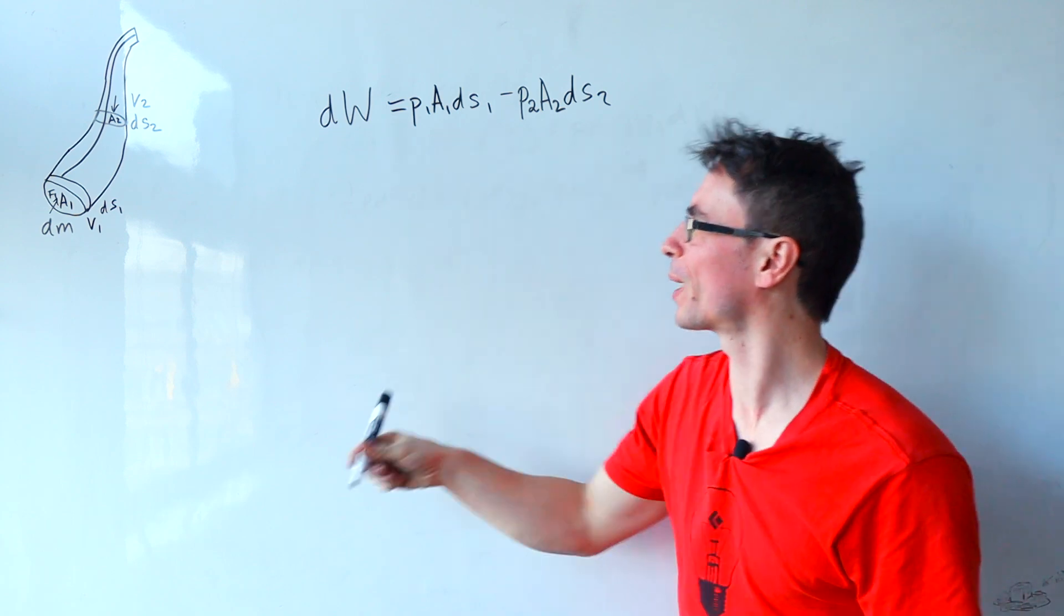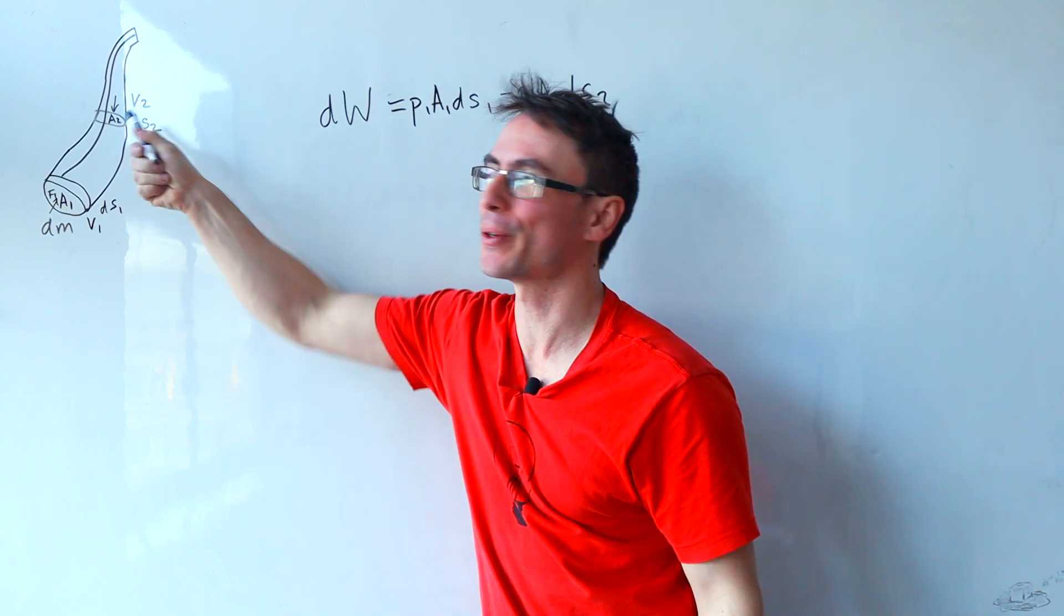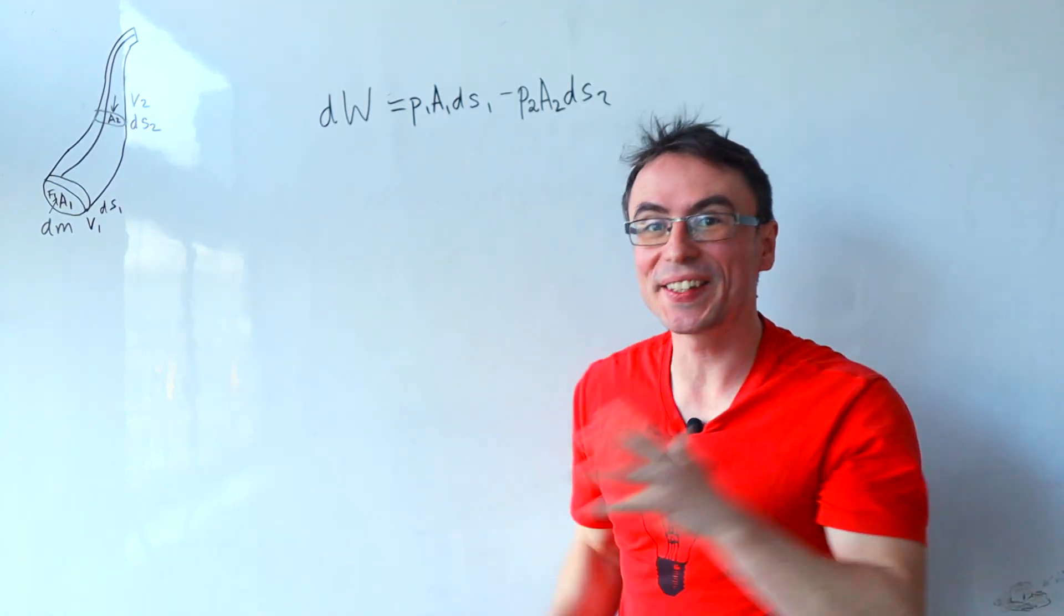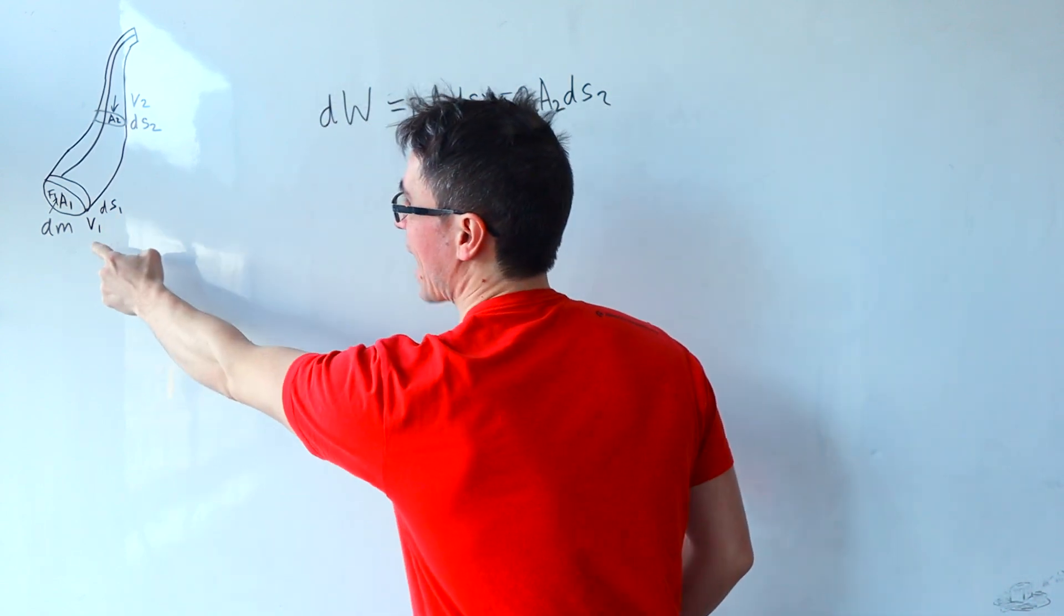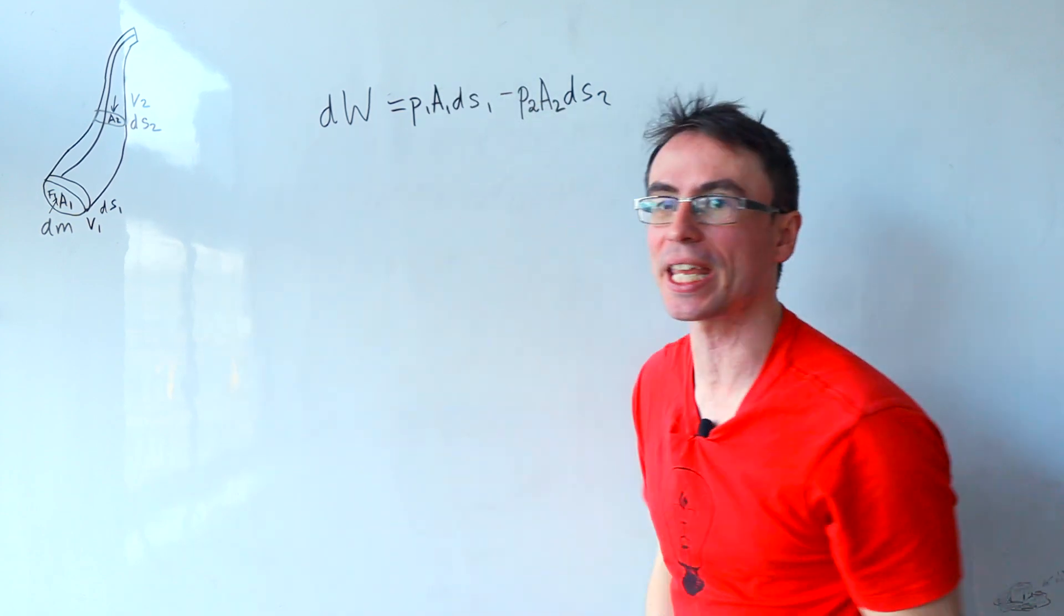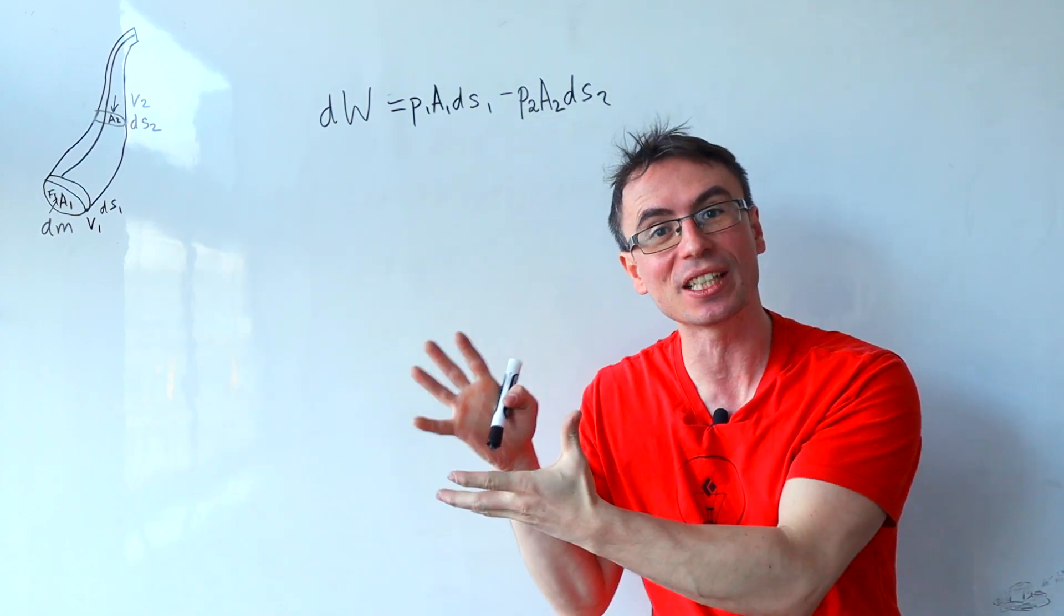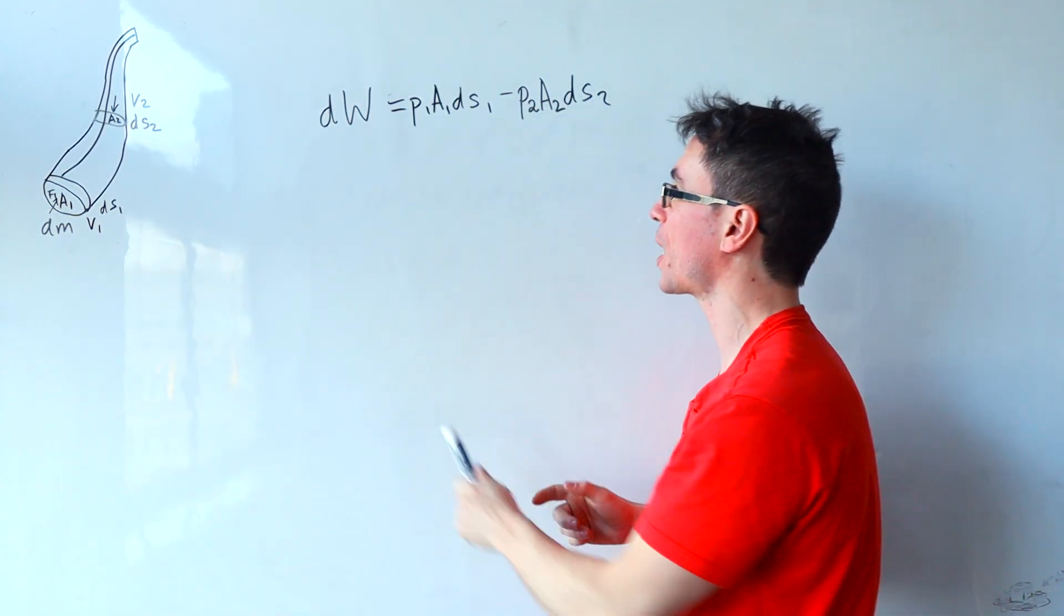Where P1 is the pressure here and P2 here. Now work done will be equal to the change of energy as the particle moves from here to here. Both the kinetic and the potential energies will actually change.